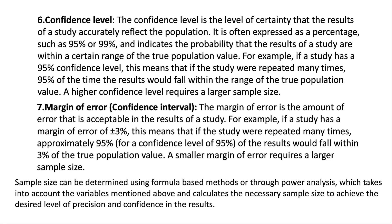Margin of error or confidence interval: the margin of error is the amount of error that is acceptable in the results of a study. For example, if a study has a margin of error of plus or minus 3%, this means that approximately 95% of results — for a confidence level of 95% — would fall within 3% of the true population value. A smaller margin of error requires a larger sample size.